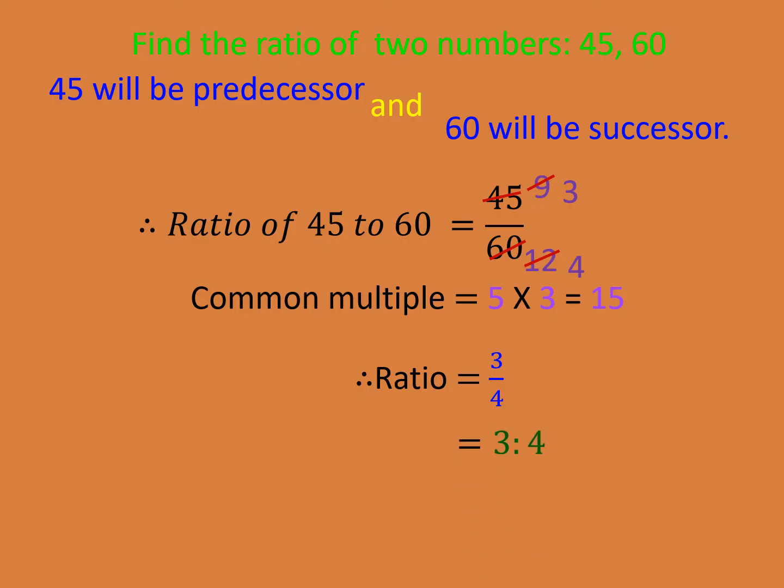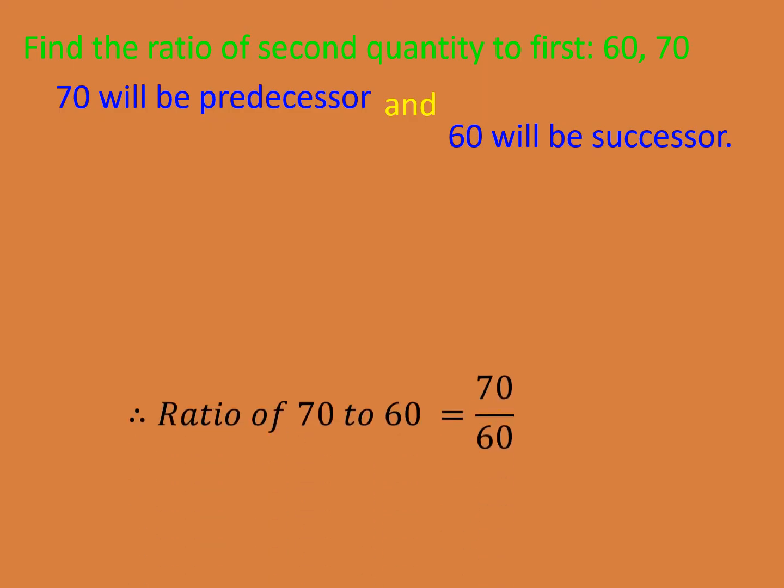Now we will do the second sum. Find the ratio of the second quantity to the first. Please be careful—now the second quantity is written first. So our predecessor will be 70 and the successor will be 60. In ratio form, we write 70 upon 60.